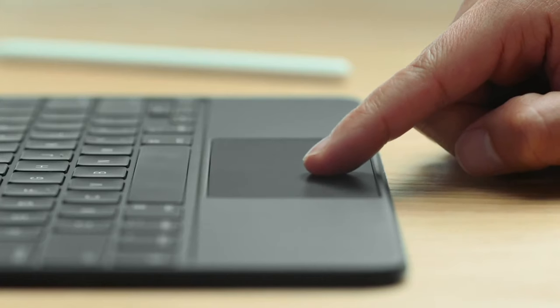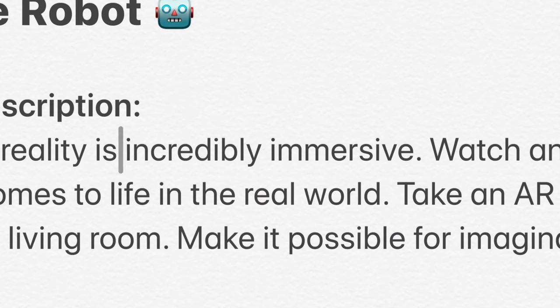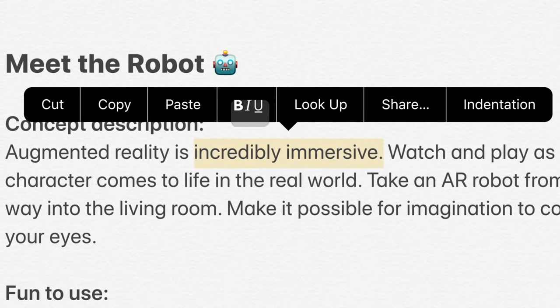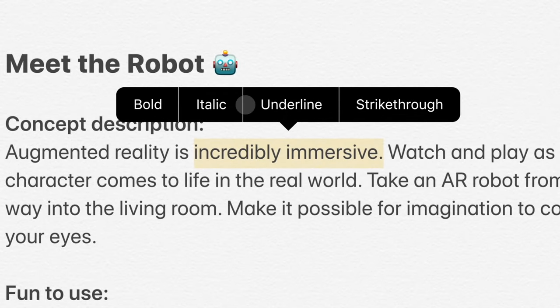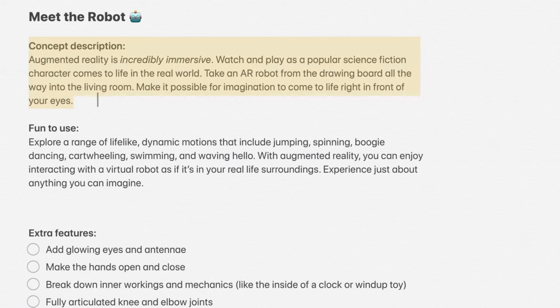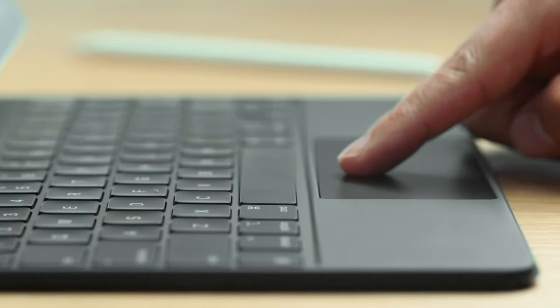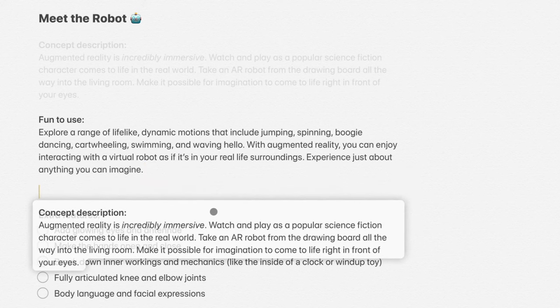But check this out. As you move over the controls, it automatically transforms to make them easy to select. And of course the trackpad is amazing for text — the cursor transforms into a precise tool that makes it super easy to select text, apply formatting, and even select whole blocks of text and do things like drag and drop to move things around.